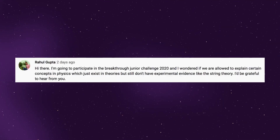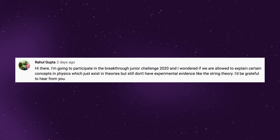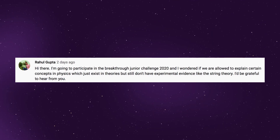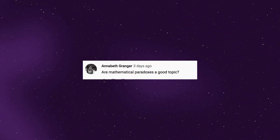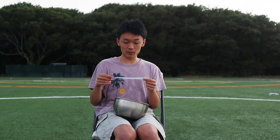I'm going to participate in the Breakthrough Junior Challenge 2020 and I'm wondering if you're allowed to explain concepts that just exist in theories without experimental evidence, like string theory. Try choosing a topic that has scientific evidence behind it or is applicable to everyday life — preferably both — because it's more satisfying and relatable for the audience. It's easier to explain and leaves a more satisfying conclusion. Annabeth asks: is a mathematical paradox a good topic? Probably — if you think it's interesting and you can explain it well, it's always going to be a good topic.